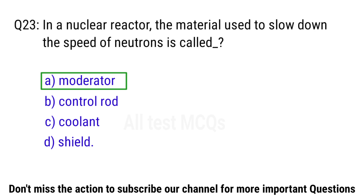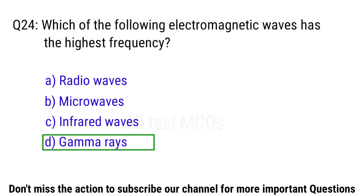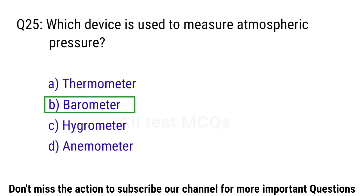Q24. Which of the following electromagnetic waves has the highest frequency? The right answer is option D. Gamma rays. Q25. Which device is used to measure atmospheric pressure? The right answer is option B. Barometer.